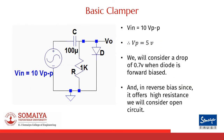The circuit shown here is a basic clamper circuit with a resistor, capacitor, and a diode. The input applied here is a sinusoidal signal with 10 volts peak-to-peak.